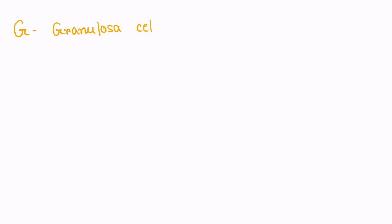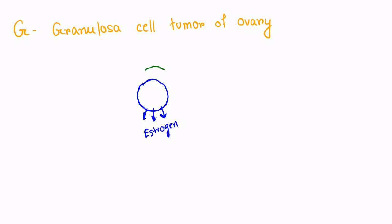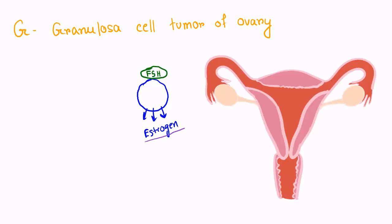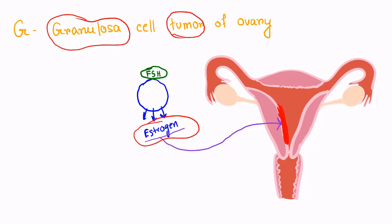G is for granulosa cell tumor of the ovary. Granulosa cells of the ovary secrete estrogen in response to FSH hormone, and the primary function of estrogen is to proliferate the endometrium. When there is a tumor of the granulosa cell, the amount of estrogen secretion will be very high. Estrogen keeps proliferating the endometrium until it becomes so thick and weak that it sheds, resulting in heavy bleeding.